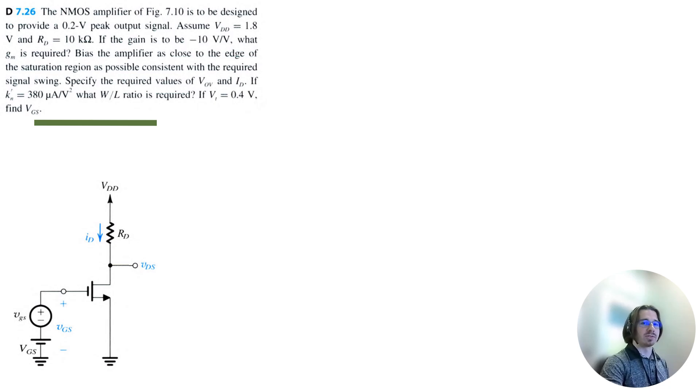Let's solve problem 7.26 from our electronic circuitry textbook by Sedra Smith. We've got an NMOS amplifier here. It is designed to provide 0.2 volt peak output signal, and we're going to assume VDD equals 1.8 volts, RD equals 10 kilo ohms. The gain is to be negative 10 volt to volt.